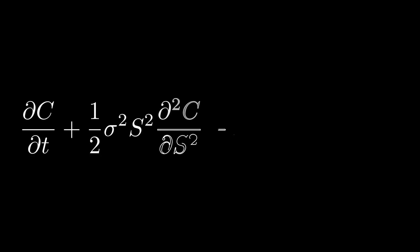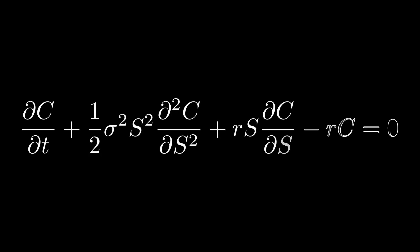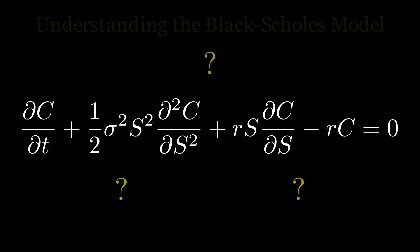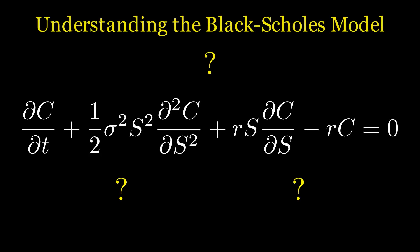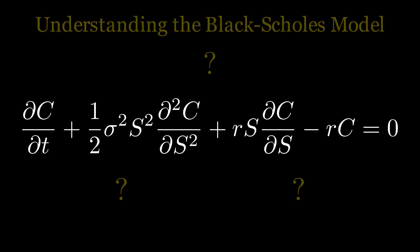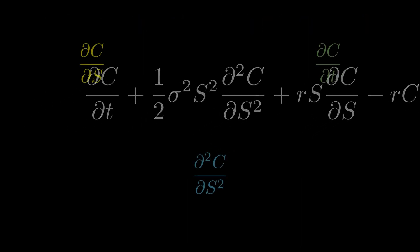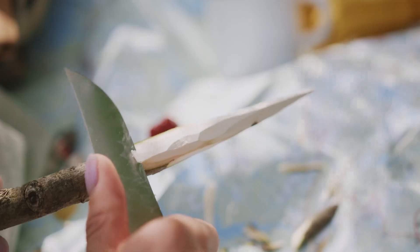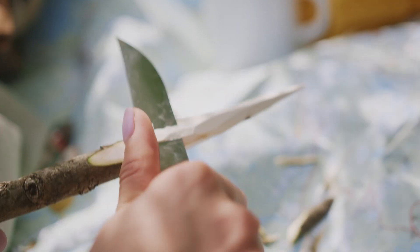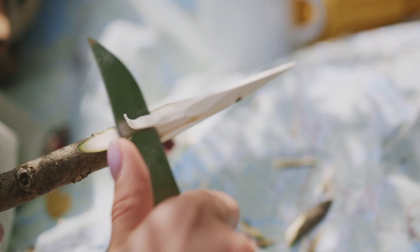You've probably heard of the Black-Scholes model, but do you know exactly how it works or why it's so powerful? In just a few short minutes, you'll learn the components of the model, its assumptions, and how it prices options — all explained without the need for any complex math. By the end, you'll have a tool that can sharpen your understanding of options and take your trading decisions to the next level.